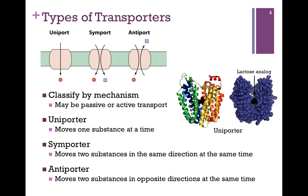Now let's look at some types of transporters that we might refer to as co-transporters. These are classified simply by how many substances move through and in what direction — whether passive or active transport in terms of energy requirement. The first, pictured at the top of the screen, is a uniporter — it moves one substance through at a time. The glucose transporter we just saw is a good example, as is the lactose transporter pictured here on the right, also an example of a uniporter.